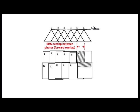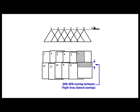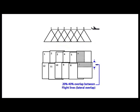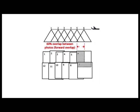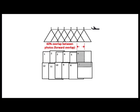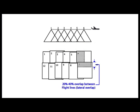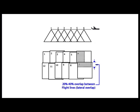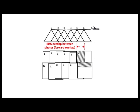Flight Direction: aerial photography is done in strips to cover the area of interest. It is advisable to keep the number of strips to a minimum. Therefore, the flight direction of strips is kept along the length of the area.